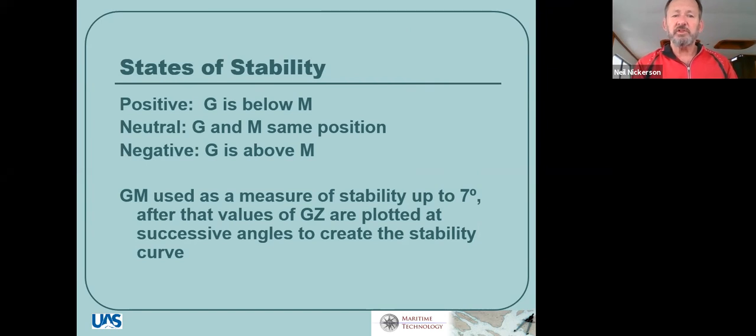We use GM as a measure of stability only up to about seven degrees angle of heel. After that, we need to use stability curves, but that becomes more advanced. And we don't do that in this class. So right now, we're basically just understanding those principles of center of gravity, center of buoyancy, metacenter, righting arm, and metacentric height.